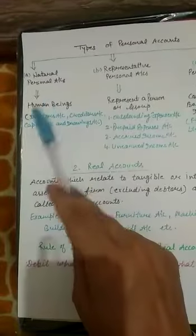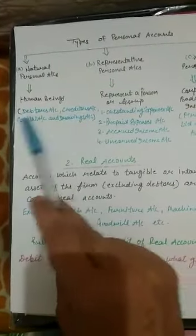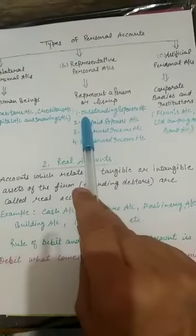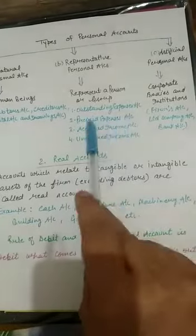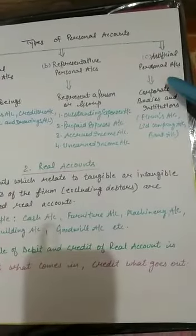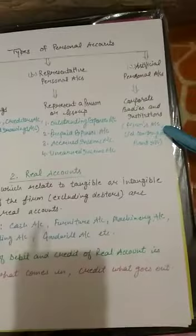There are three types of personal accounts: natural, representative, and artificial. Natural personal accounts are directly related to human beings — for example, debtors account, creditors account, capital account, and drawings account. Representative personal accounts represent any person or group — related to outstanding expenses, prepaid expenses, accrued income, and unearned income. Artificial personal accounts are related to corporate bodies and institutions such as firms, limited companies, and bank accounts.